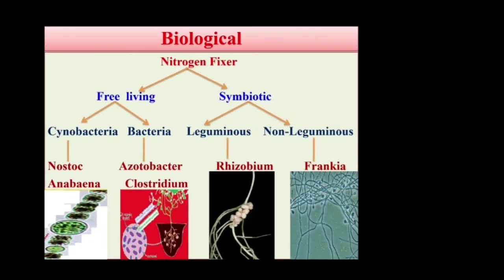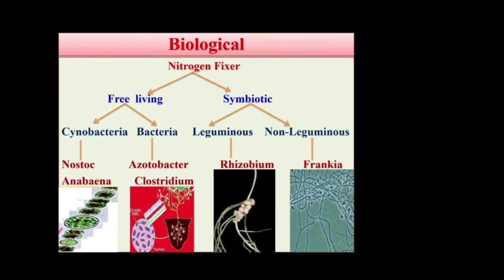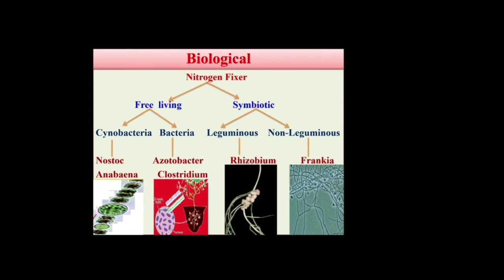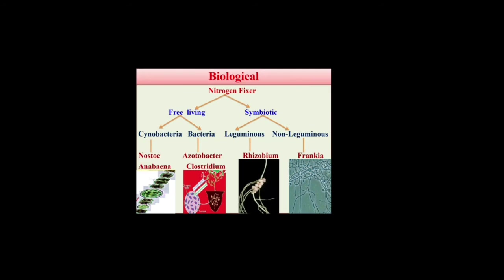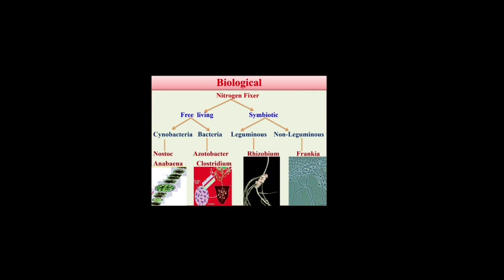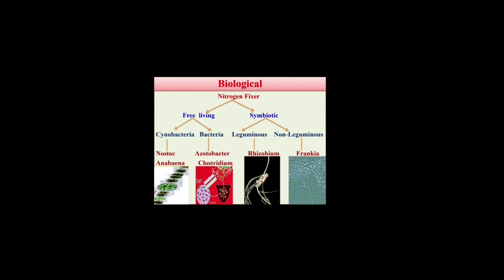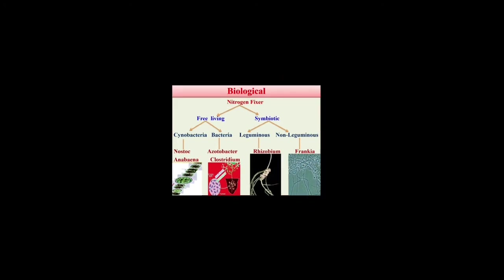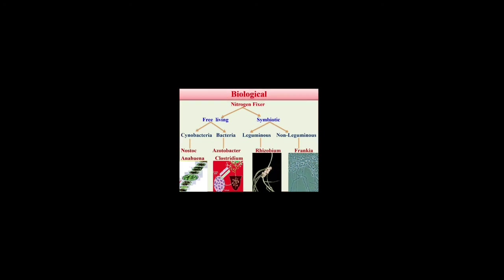Biological nitrogen fixation is carried out by different free-living bacteria like Clostridium and Azotobacter, cyanobacteria or blue-green algae like Nostoc and Anabaena, and symbiotic bacteria like non-leguminous Frankia with Alnus, and leguminous Rhizobium present in the nodules of leguminous plants like peas and pulses. The enzyme nitrogenase, which is capable of nitrogen reduction, is present exclusively in prokaryotes.